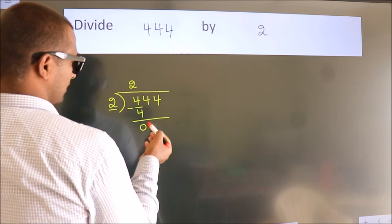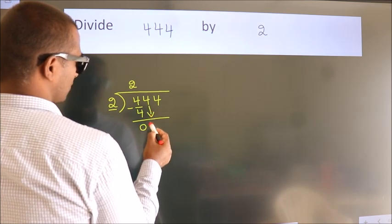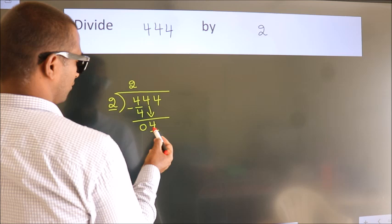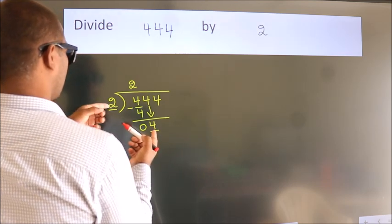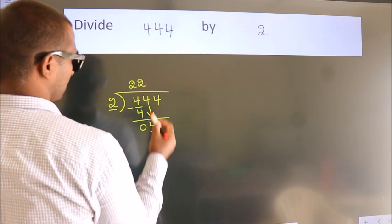After this, bring down the beside number. So 4 down, 4. When do we get 4? In 2 table, 2 twos, 4.